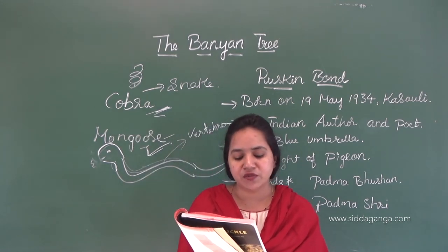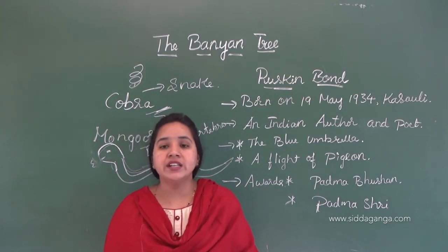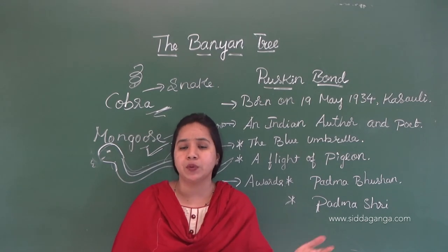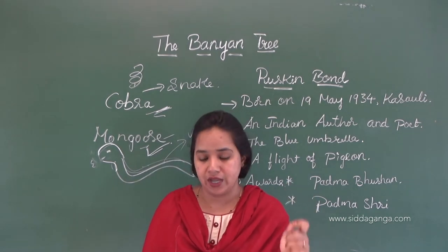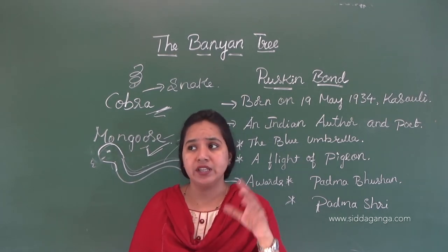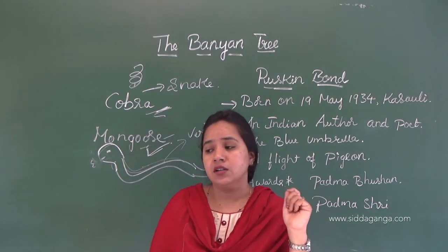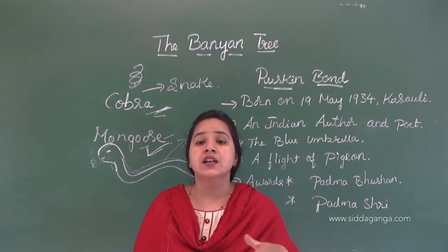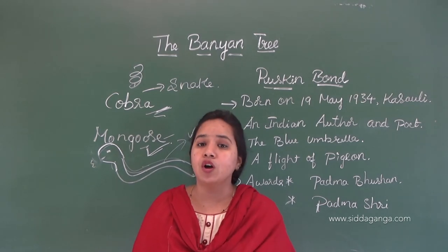In the spring, when the banyan tree was full of small red figs, birds of all kinds would flock into its branches. Figs means anjir — a fruit. The banyan tree was filled with small red colored figs in spring, and not only the fruits — many birds also came there. A flock of birds means many birds together, sitting at the branches.